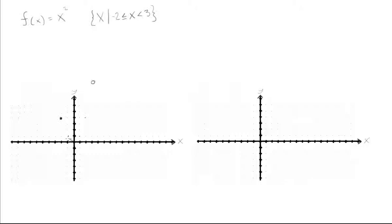So when we draw this, our parabola will look like that, and it will stop there because it can't go any farther to the left than x = negative 2. And our parabola will come up this way, and it will come right up to x = 3, but it won't actually touch. It can have 2.999999 et cetera, it just will not be there. And so this gives us our domain — this is the restricted domain that we were given.